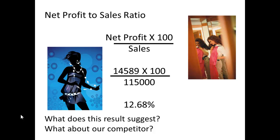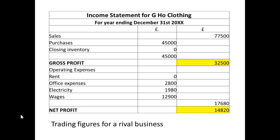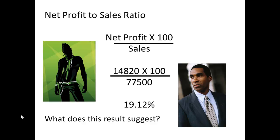So what does this tell you? How does it compare with the previous year? And what about our competitor? Let's look at our competitor, Geo Clothing. These are the figures for the rival business. The net profit is 14,820 and the sales are 77,500. So to get my net profit to sales ratio: 14,820 times 100 divided by 77,500 gives 19.12%.